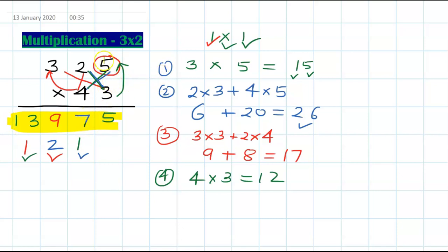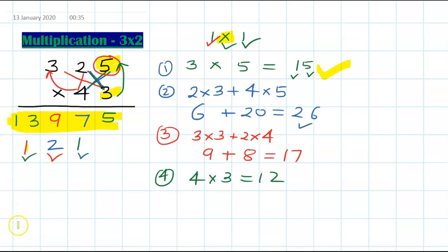To recap 325 times 43: Step 1 is 5 times 3 giving 15, write 5 carry 1. Step 2 cross gives 3 times 2 plus 4 times 5 = 26 plus carry 1 = 27, write 7 carry 2. Step 3 hide 5, cross gives 9 plus 8 = 17 plus carry 2 = 19, write 9 carry 1. Step 4 is 4 times 3 = 12 plus carry 1 = 13. Answer: 13975.